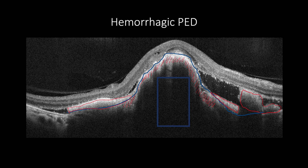Both serous and hemorrhagic CNV may present with subretinal fluids when associated with an active CNV. Nevertheless, they may be combined with ellipsoid zone and external limiting membrane disruption along with intraretinal cysts and increased retinal thickening.